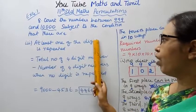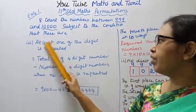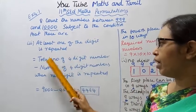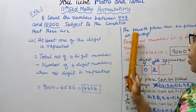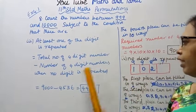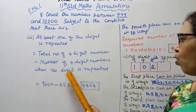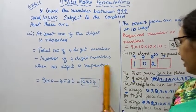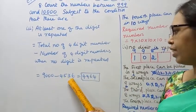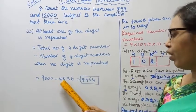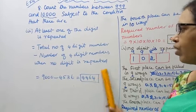For the third condition — at least one digit is repeated — we use: total number of 4-digit numbers minus number of 4-digit numbers with no digit repeated: 9000 − 4536 = 4464.